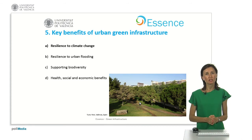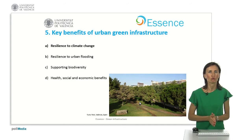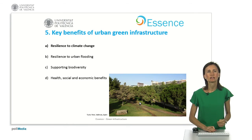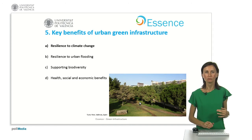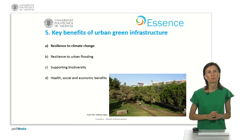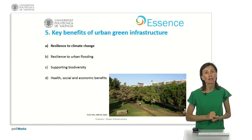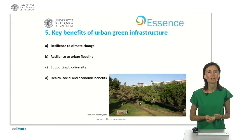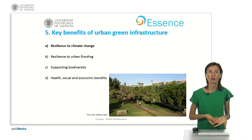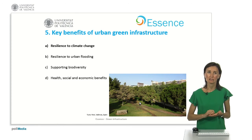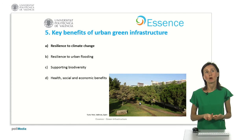Moving to the key benefits of urban green infrastructure — in other words, green infrastructure in the city — we could summarize them in four groups. First, the resilience to climate change. Vegetation, especially tree canopy, reduces the heat island effect and reduces indoor temperatures, because of the function of cooling the air and providing shading.